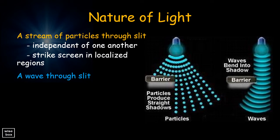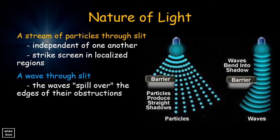When a wave passes through a slit or barrier, the waves spill over the edges of their obstructions. You can observe the waves bend into shadow.